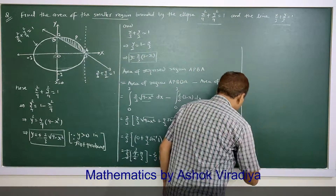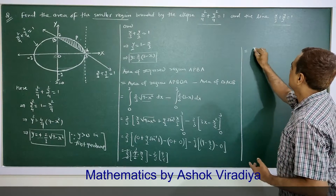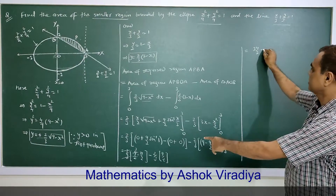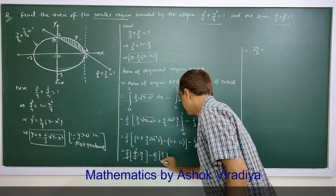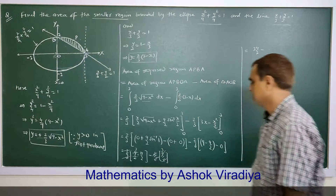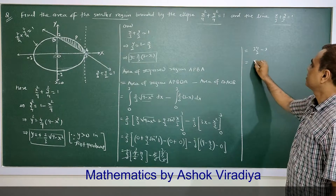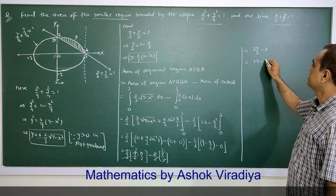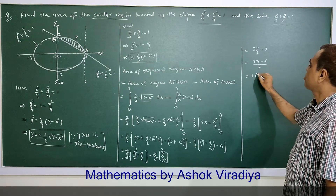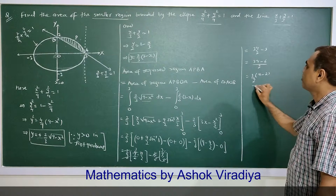So the result is 3 pi by 2 minus 3. Taking LCM 2: this is 3 pi minus 6 upon 2, taking 3 common giving 3 into pi minus 2 by 2. So this is the required area.